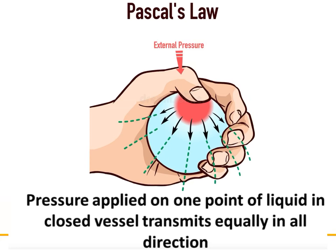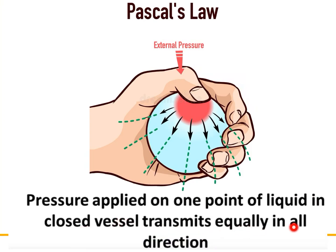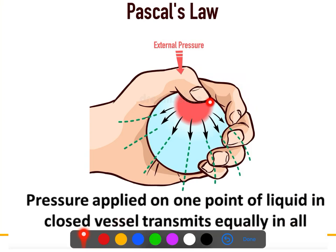Pascal's law is: pressure applied on one point of liquid in a closed vessel transmits equally in all directions. If you look at this picture, this is the closed vessel with water inside. Now if we apply pressure here at this point, it will transmit an equal amount of pressure in all directions.